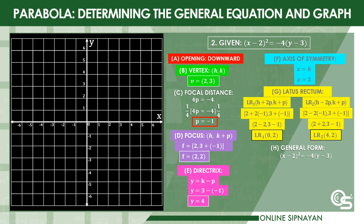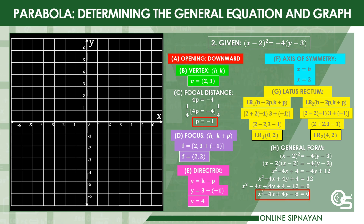Next, to get the general form from the standard form (x − 2)² = −4(y − 3), we expand (x − 2)²: (x − 2)(x − 2) = −4(y − 3). Using the FOIL method on the left and distributive property on the right, we get x² − 4x + 4 = −4y + 12. Applying the addition property of equality, we get x² − 4x + 4y + 4 = 12, and then x² − 4x + 4y + 4 − 12 = 0, which simplifies to the general form x² − 4x + 4y − 8 = 0.